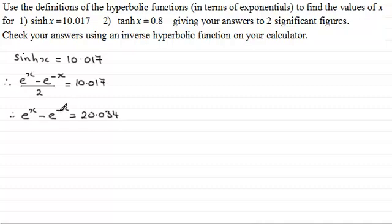Now e to the power minus x is 1 over e to the x and what I'd want to do is to remove that e to the x by multiplying throughout by e to the power x. So we'd get e to the power x times another e to the power x which is e to the power x all squared. It's better to write it like this rather than e to the power 2x. And then for this term this is just going to be minus 1 and then we're going to have 20.034 e to the power x. And what we've got here is a quadratic equation in e to the power x.